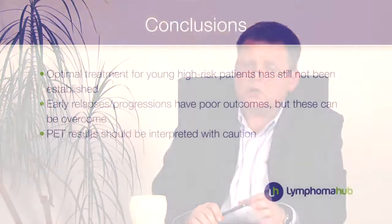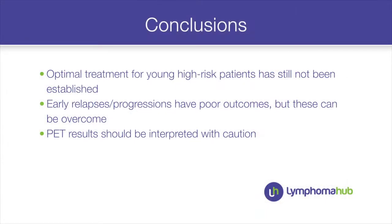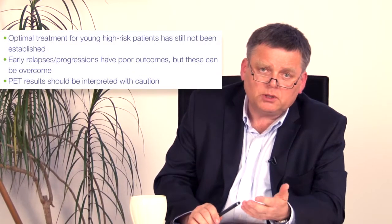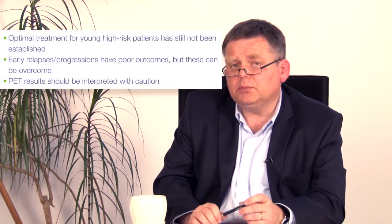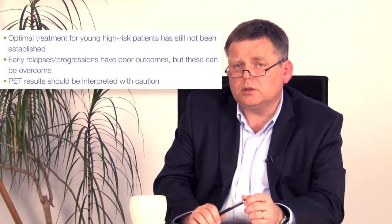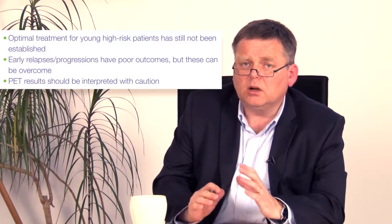To conclude from this interesting case: first, there is still no standardized treatment for young poor-risk DLBCL patients, and we hope new targeted therapies can improve outcomes. Second, although the patient had poor prognostic features at relapse, he responded well, passed through stem cell transplantation, and achieved complete remission. Third, we must always carefully evaluate PET results in the context of the clinical picture and laboratory findings — in this case, I truly do not believe the PET positivity represented lymphoma relapse.